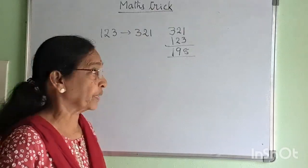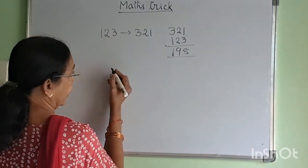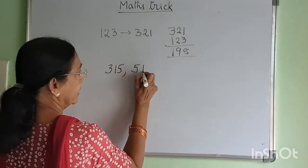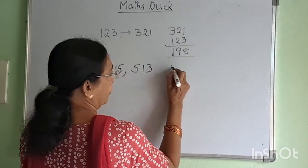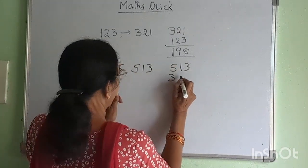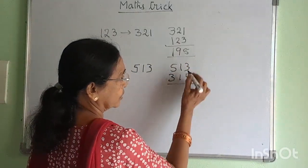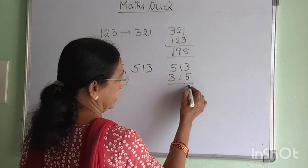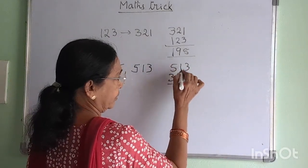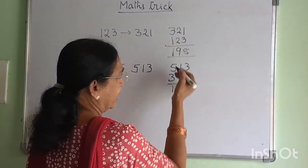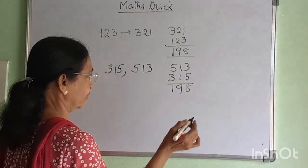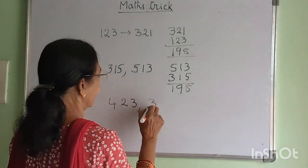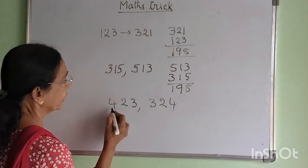So, if you want to give an example: we will give an example of 315, and we will give an example of 513. 513 is the bigger number. 513 minus 315 is the bigger number.